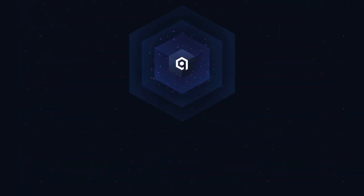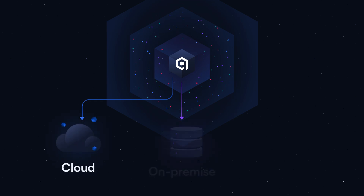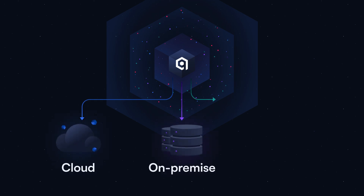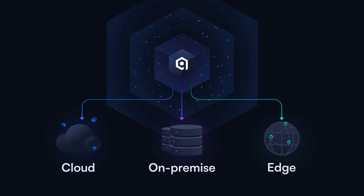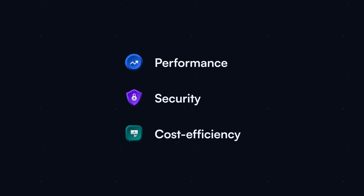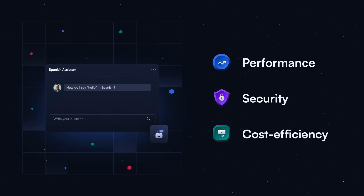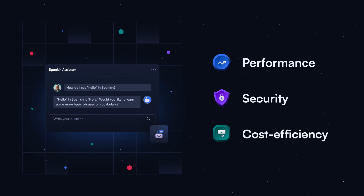With Hybrid Cloud, businesses can seamlessly deploy and manage vector databases across any cloud provider, on-premise, or edge location. This ensures performance, security, and cost efficiency for AI-driven applications, as well as the ability for organizations to control and protect where and how sensitive data is used.